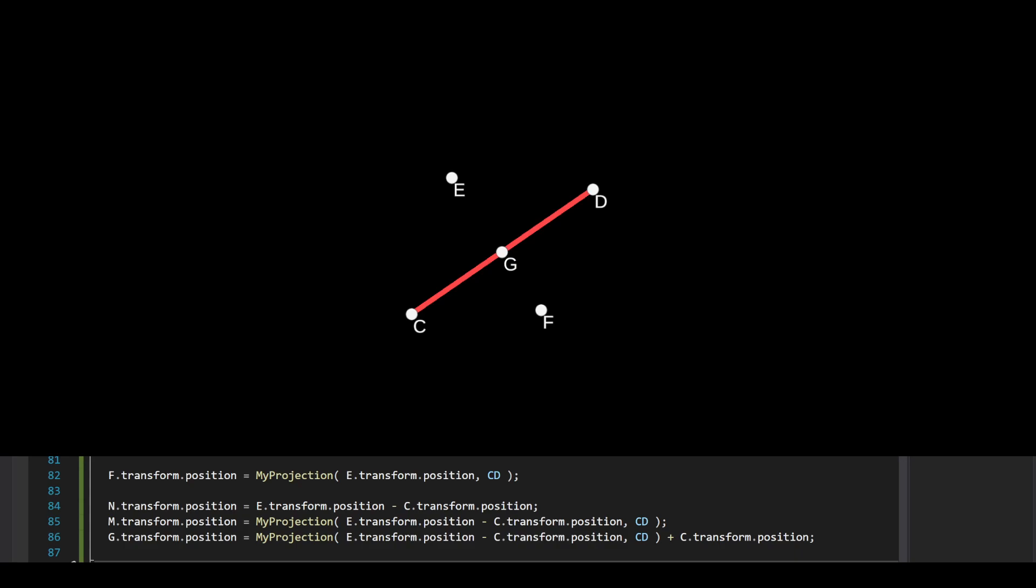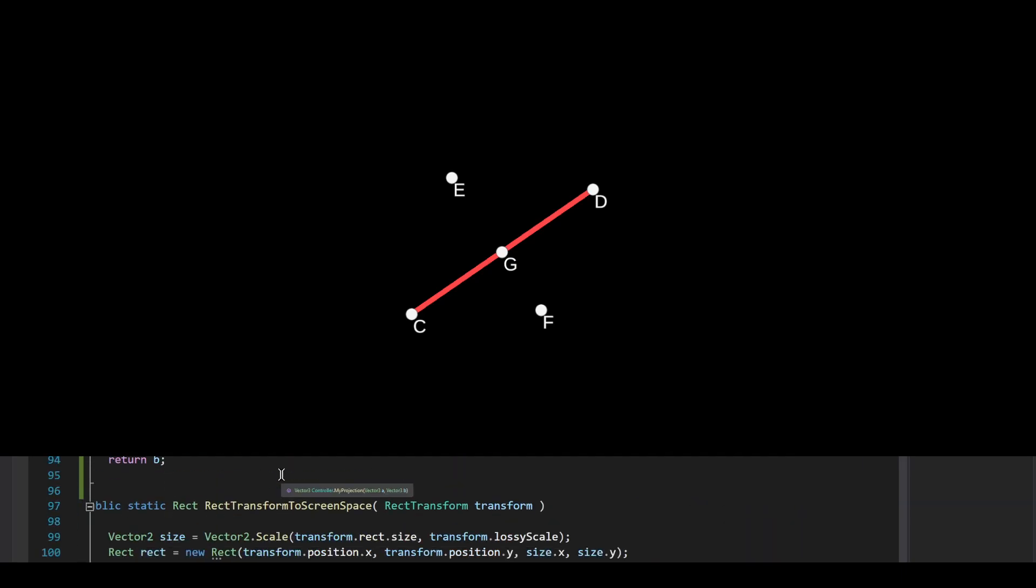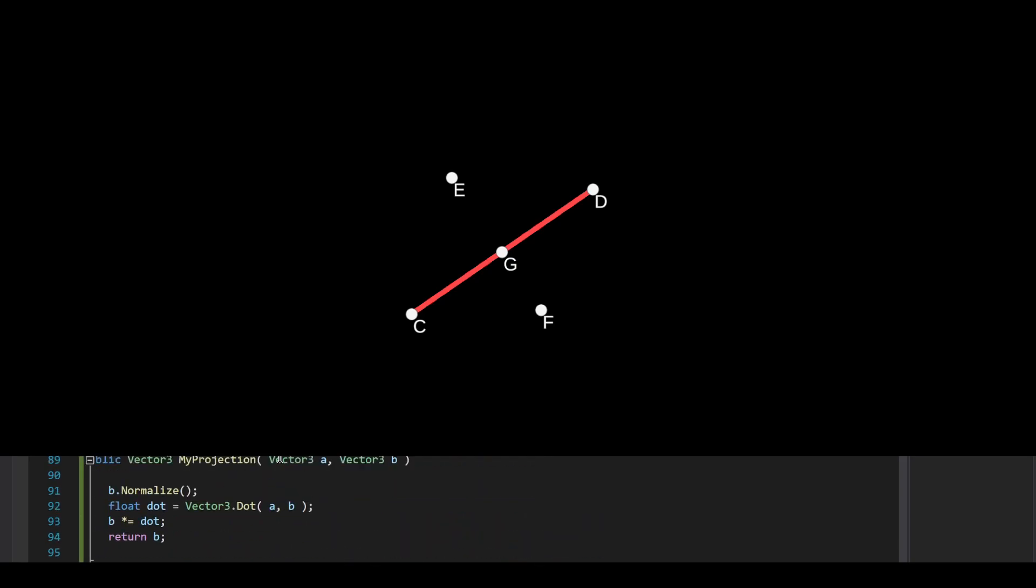On the bottom of my screen here, I'm showing the code to do that, and here we're referencing a function called myProjection. This is just a very simple implementation of the standard projection formula. It looks something like this. Basically, a projection of A onto B is going to be in the direction of B with magnitude A dot B scaled by B. But the reason why we normalize B is so that we don't have to do the scaling.